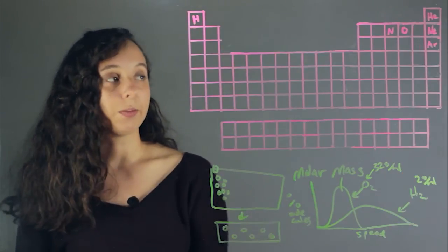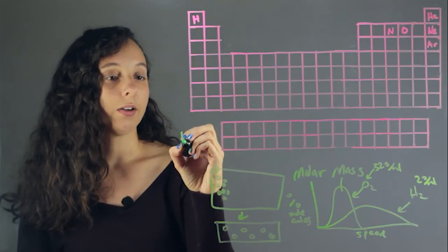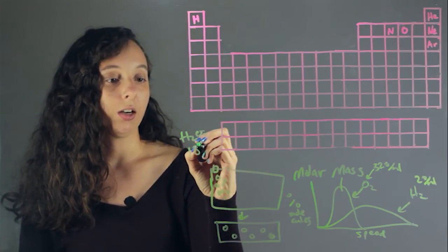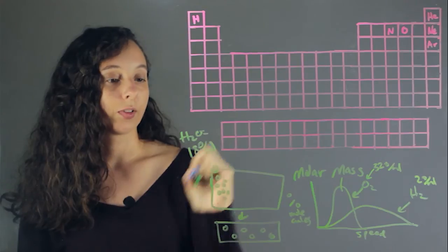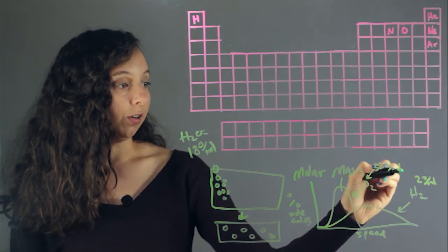So what if we pick something that's right in the middle? How about water? So water, H2O, is about 18 grams per mole. Now, this is going to look right in the middle of 32 and 2.